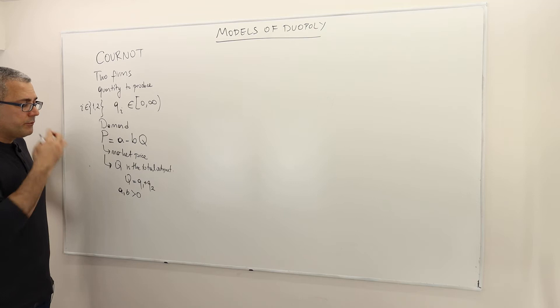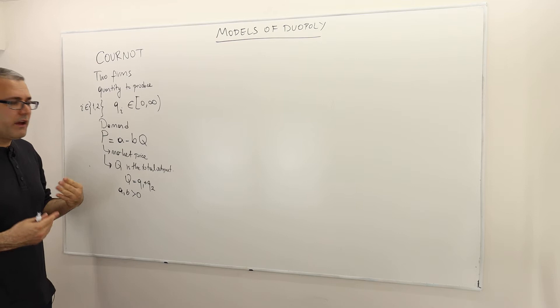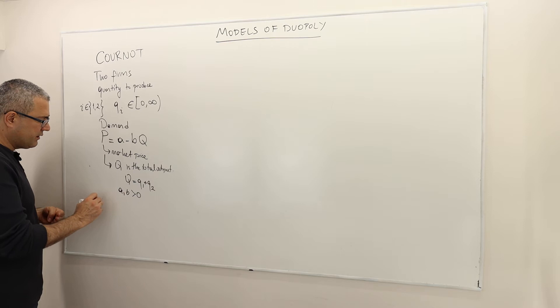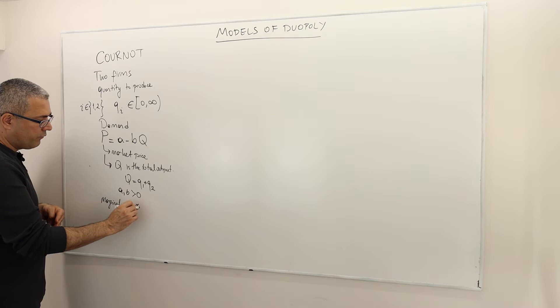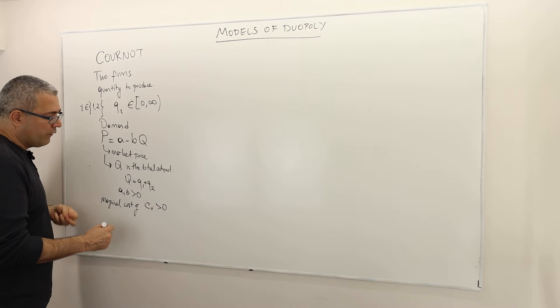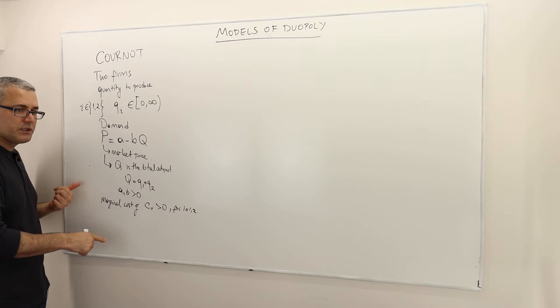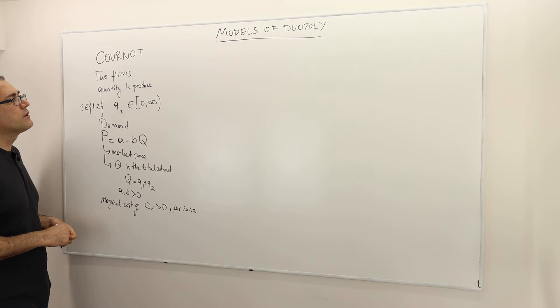In order to talk about profit, we need to talk about cost. The price and quantity give us revenue, but what about cost? For simplicity, let's assume there is no fixed cost, but there is a marginal cost of C_i, which is greater than zero for each firm i equals one and two. So firm one has cost C1 and firm two has cost C2 — these are marginal costs with no fixed cost.